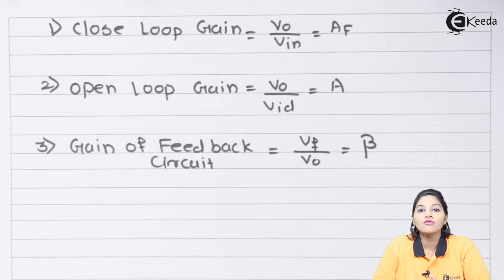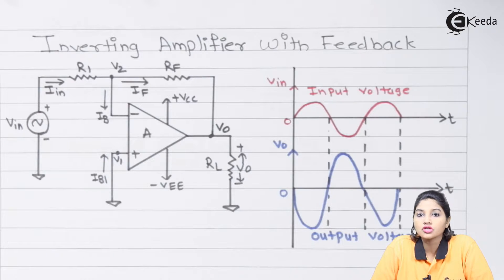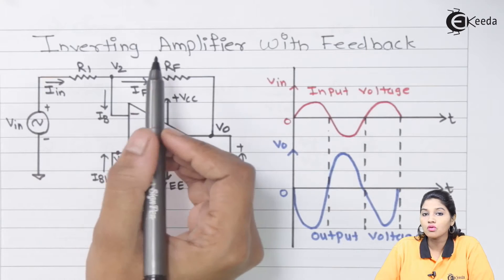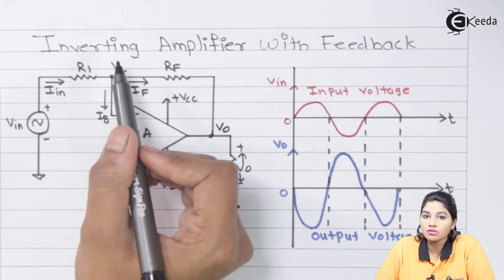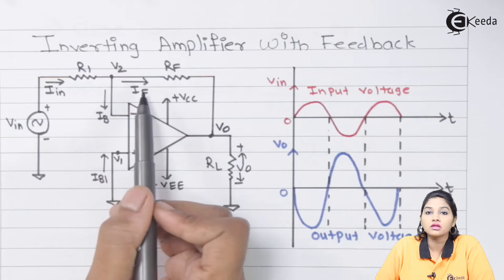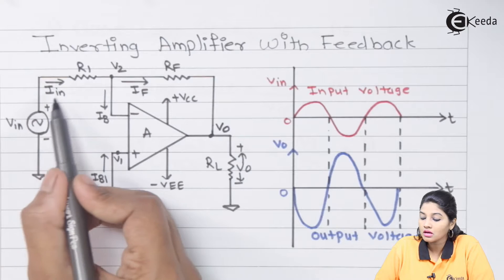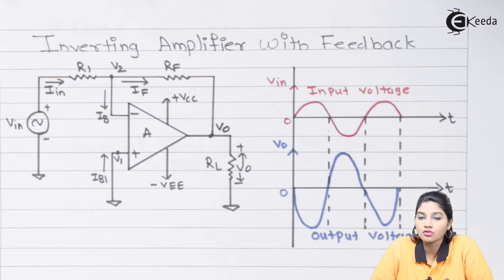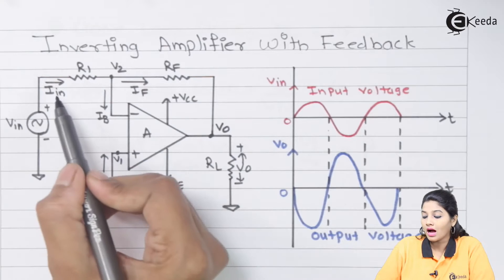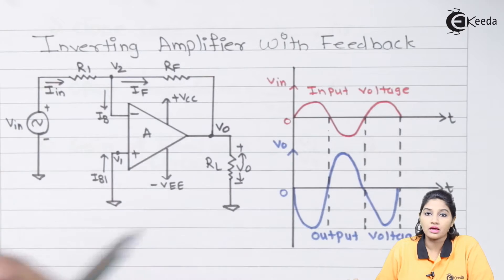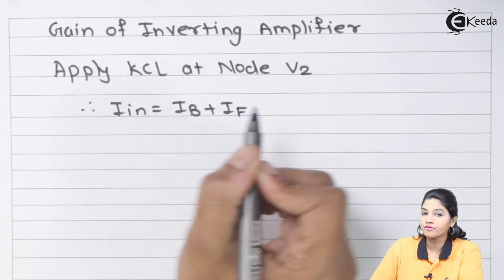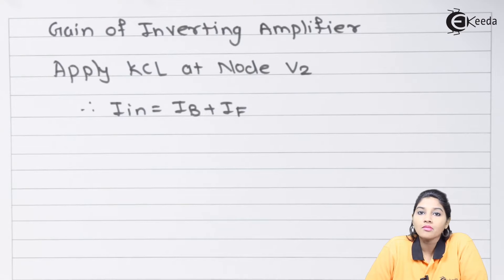Now let's derive the equation for the gain of the inverting amplifier in closed loop configuration. To obtain the output equation, we apply KCL at node V2. When KCL is applied at node V2, the input current equals the sum of output currents: I_in equals I_b plus I_f.